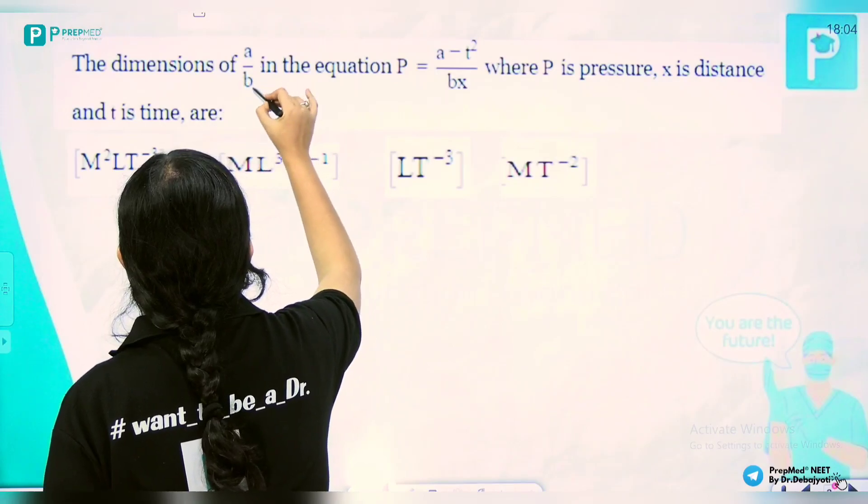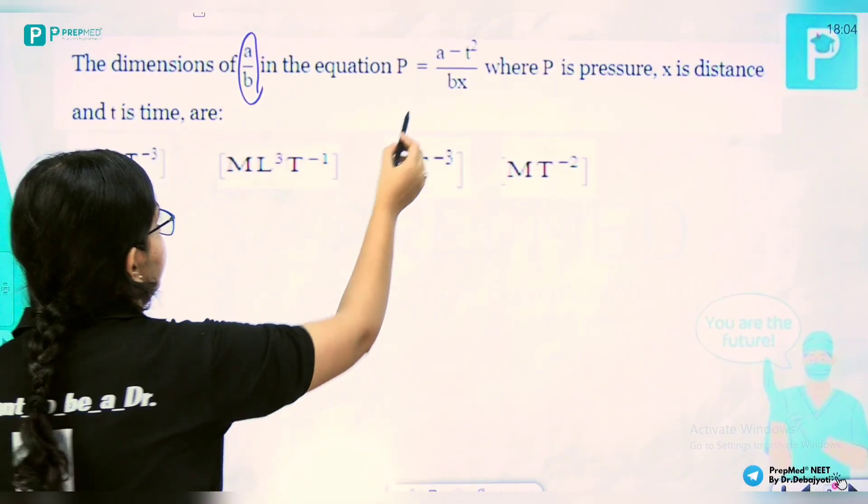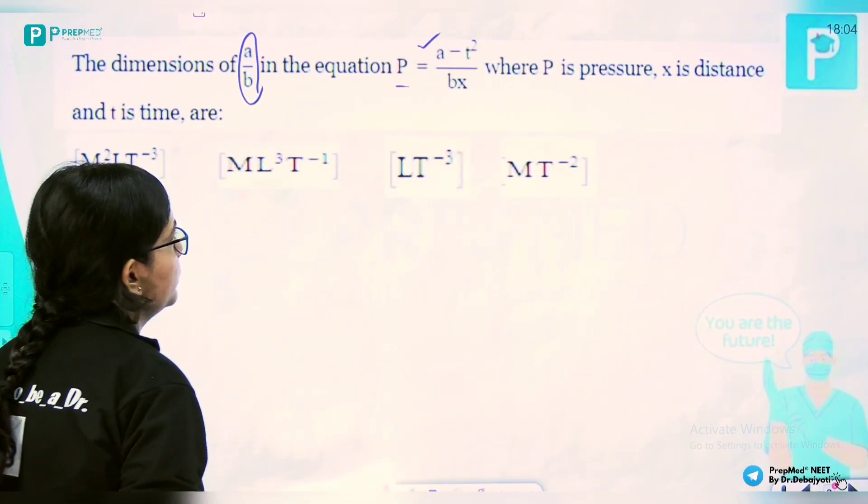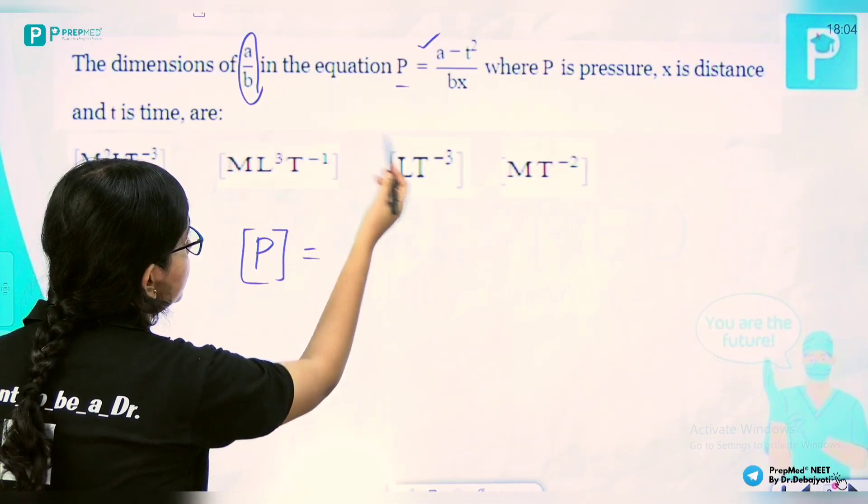First problem: We need to calculate the dimension of a/b. Given that pressure P = (a - t²)/(bx), we can directly write that the pressure dimension is equivalent